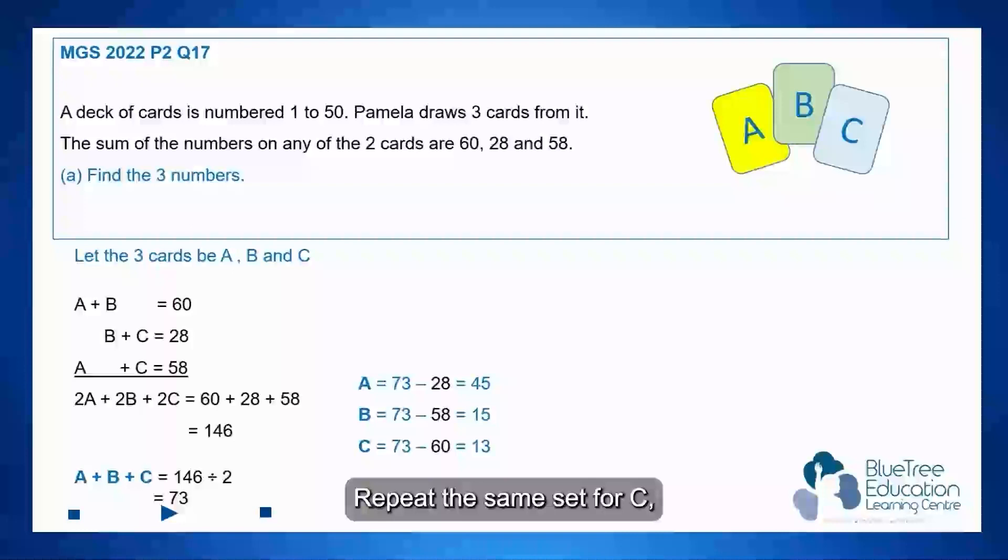Repeat the same step for C. We take the total 73 minus 60, which is the card that says A plus B and therefore C has a value of 13. So we have solved this question. The three numbers are 13, 15 and 45.